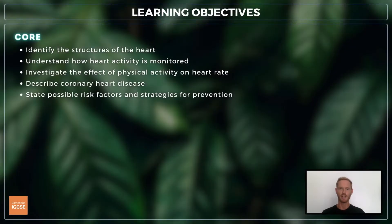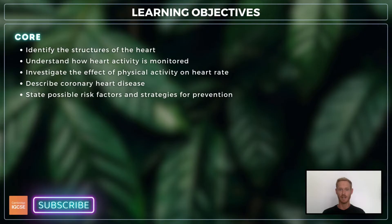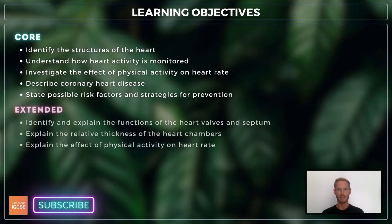For topic 9.2, you need to identify the structures of the heart, understand how heart activity is monitored, investigate the effect of physical activity on heart rate, and describe and state possible risk factors for coronary heart disease. For extended, you need to identify and explain the function of the heart valves and septum, explain the relative thickness of the heart chambers, and explain the effect of physical activity on heart rate.